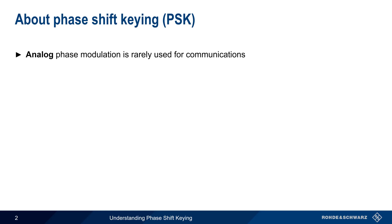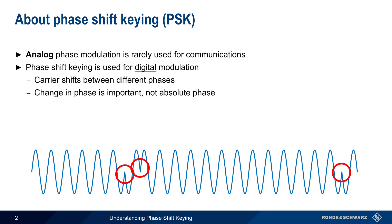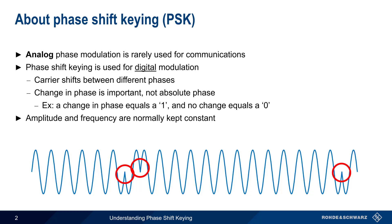Purely analog phase modulation is rarely used for communications. Phase shift keying, or PSK, is a digital modulation scheme in which we shift the carrier between different phases. Information is conveyed by changes in the phase, not by the absolute phase of the received signal. For example, a logical 1 could be indicated by changing the phase, and a logical 0 could be indicated by no change in phase. In pure PSK, both the amplitude and the frequency of the transmitted carrier are normally kept constant, although many modern digital modulation schemes, such as QAM or APSK, combine both phase and amplitude modulation.